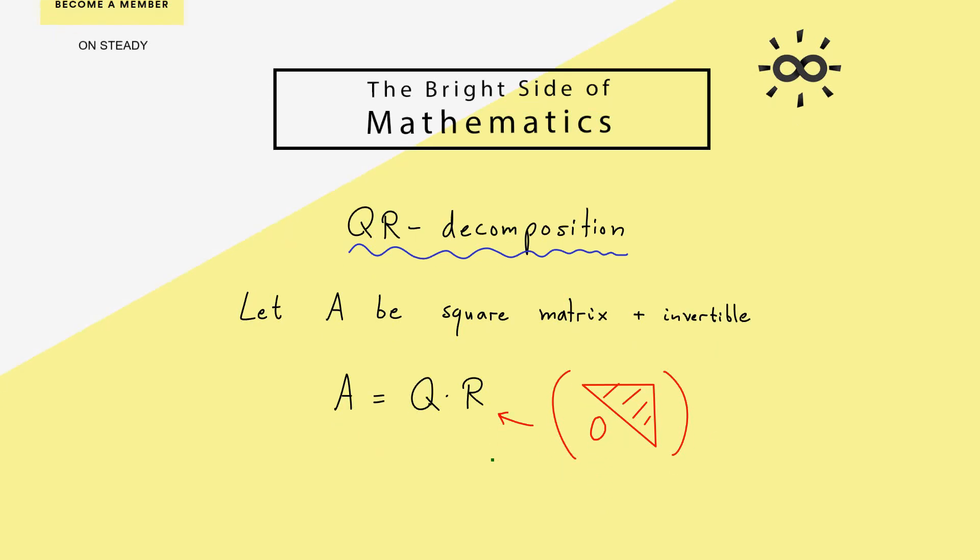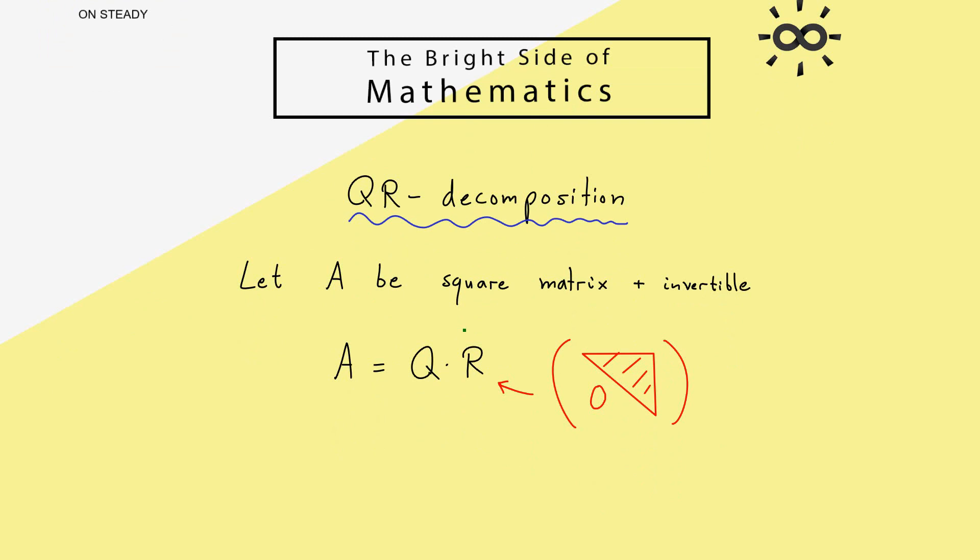And on the other hand we have our matrix Q, which should be an orthogonal or unitary matrix. If we deal in the real vector space R^n, we want here an orthogonal matrix, which means that the matrix is invertible and that the transpose is the same as the inverse of Q. And if we deal in the complex vector space C^m, we want the unitary matrix, which means roughly the same, but here we use the adjoint and it should be the same as the inverse of Q.